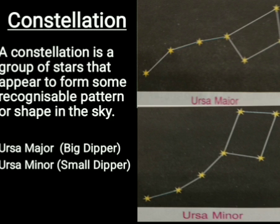One of the most important constellations which we can see during spring in the early part of night is Ursa Major. Ursa Major is also called the Great Bear or Big Dipper. The two stars at the top of this constellation are called Pointers. This is because the line joining those points is in the direction of a special star called the Pole Star or North Star.